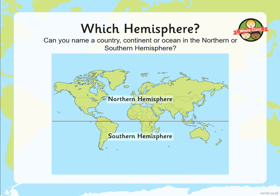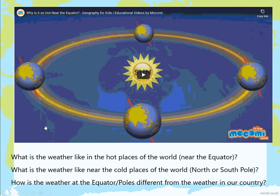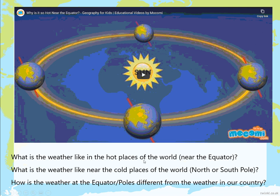Just have a point if you can recognise anywhere — you might well recognise this place here, and a lot of people have links with this place here. Now we've got a second video which explains a lot more about what the weather is like in the hot places of the world, what it's like in the cold places, the North and South Pole, and how it changes and differs from our country. Watch that video and then have a go at answering those questions.